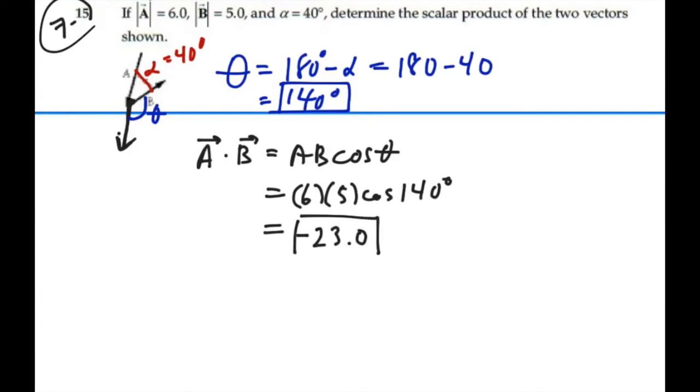We weren't given units, so that's our answer. For the scalar product between these two vectors, the dot product is negative 23.0.